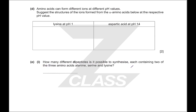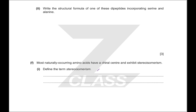For how many different dipeptides can be synthesized each containing two of the three amino acids alanine, serine, and lysine: this is a combinations question — it's 3 × 2 × 1 = 6. To write the structural formula of a dipeptide incorporating serine and alanine: link the two with a peptide bond, connecting the carboxylic acid of one to the nitrogen group of the other, making sure the R groups are correct for the two amino acids specified.